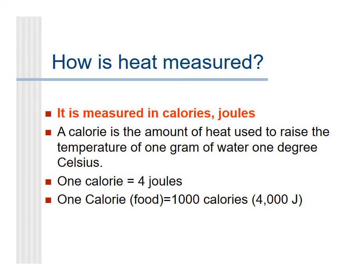How is heat measured? Heat is measured in units such as calories and joules. A calorie is the amount of heat used to raise the temperature of 1 gram of water by 1 degree Celsius. 1 calorie is equal to 4 joules.